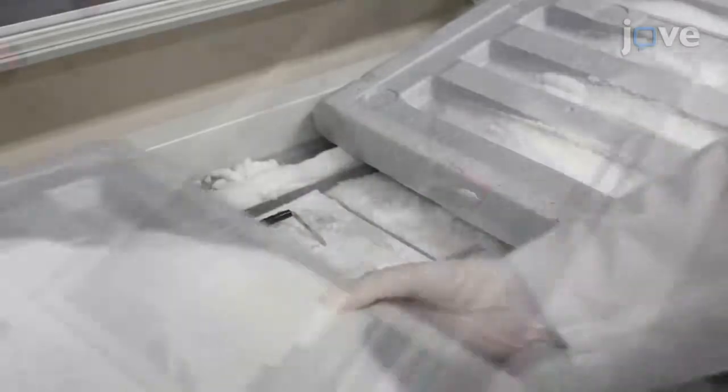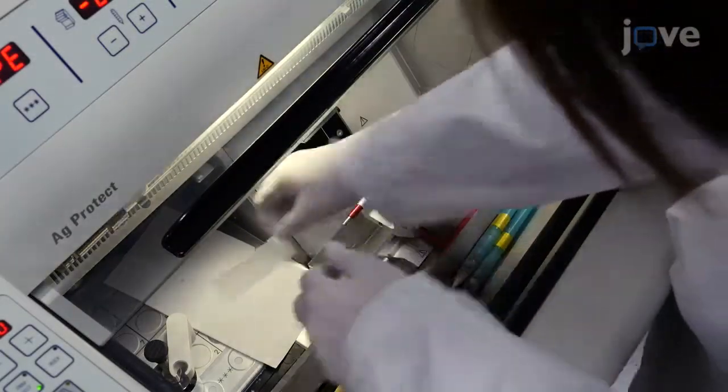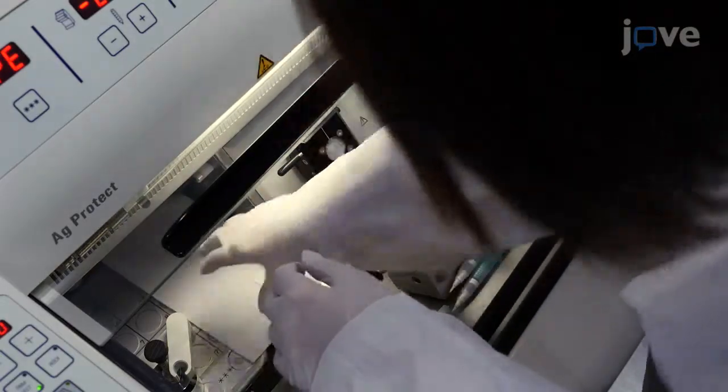To cut the tissue sections on a cryostat, first place conductive indium tin oxide, or ITO, coated microscope glass slides inside the cryostat.